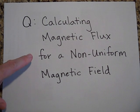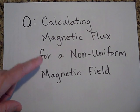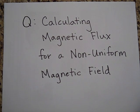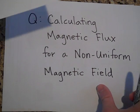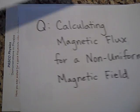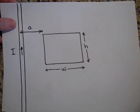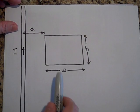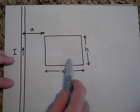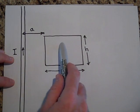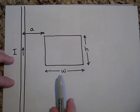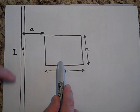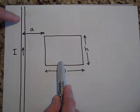I'd like to tell you how to calculate the magnetic flux for a non-uniform magnetic field. For a non-uniform magnetic field, this is one example. Let's say we wanted to find the flux going through this hoop, and that flux would be due to the magnetic field of this wire.